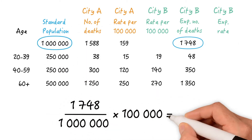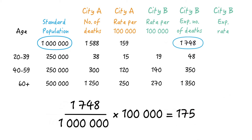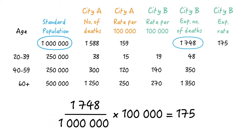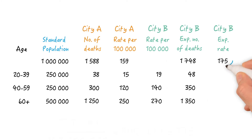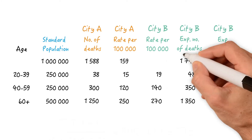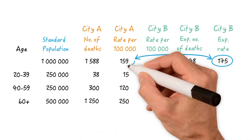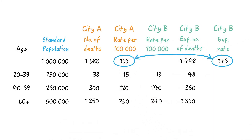That's 1,748 divided by 1,000,000 times 100,000, so 175. This means that the age-adjusted death rate using city A as the standard population would be 175 per 100,000. We can compare that to the crude death rate of city A of 159.